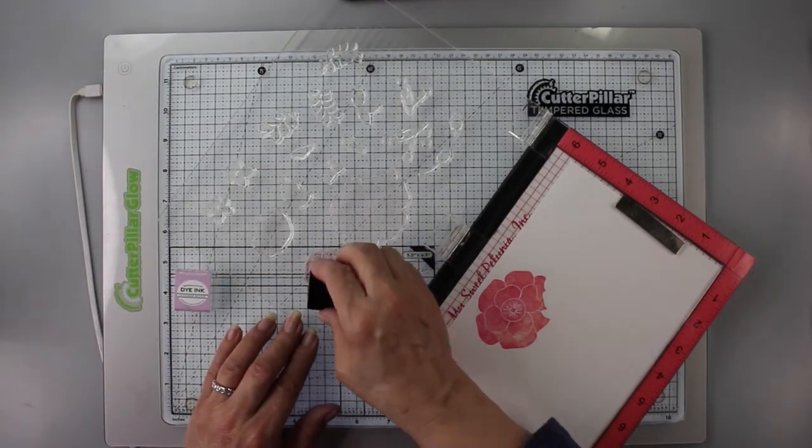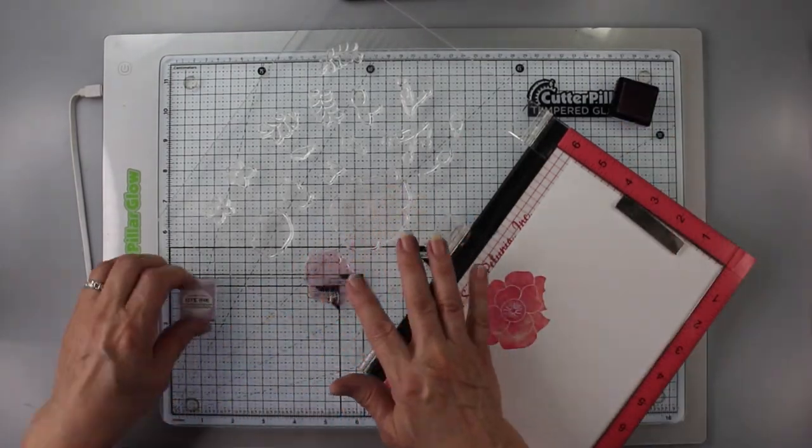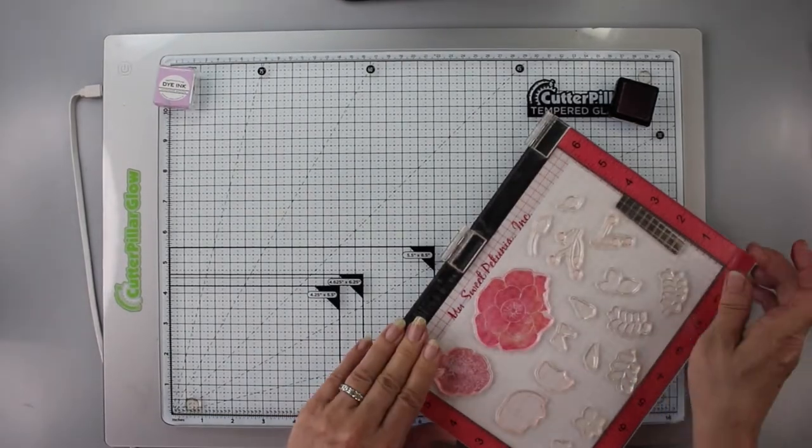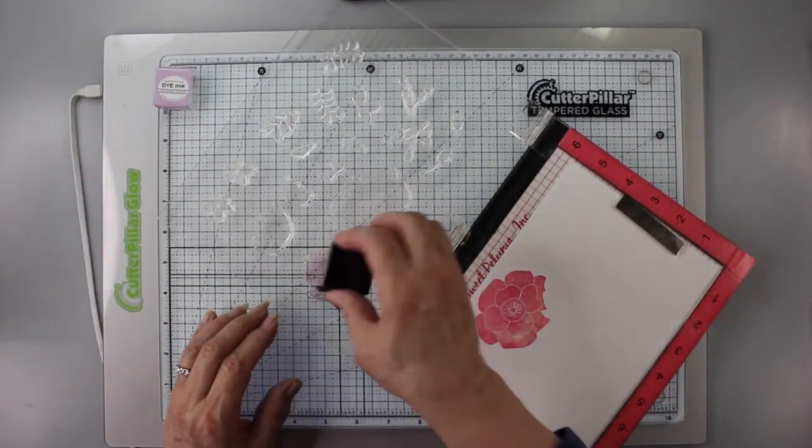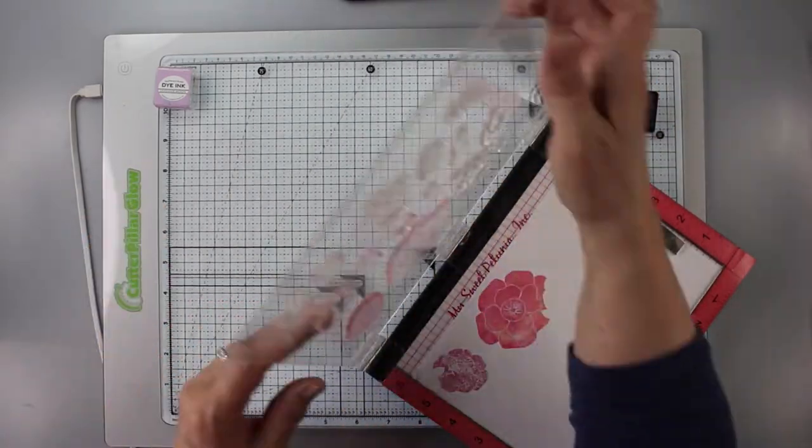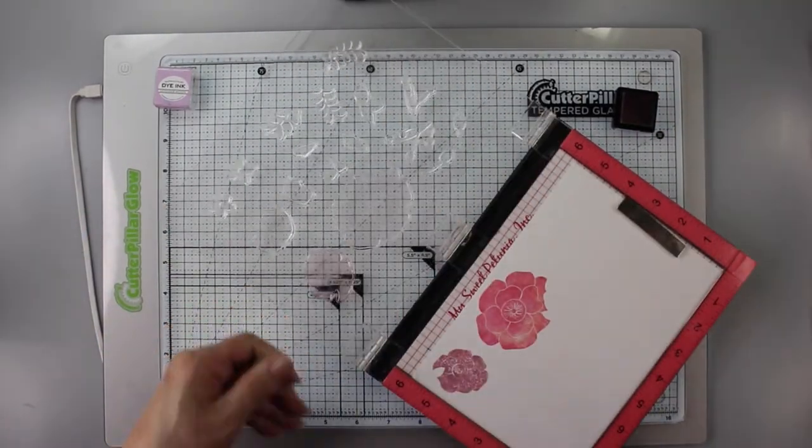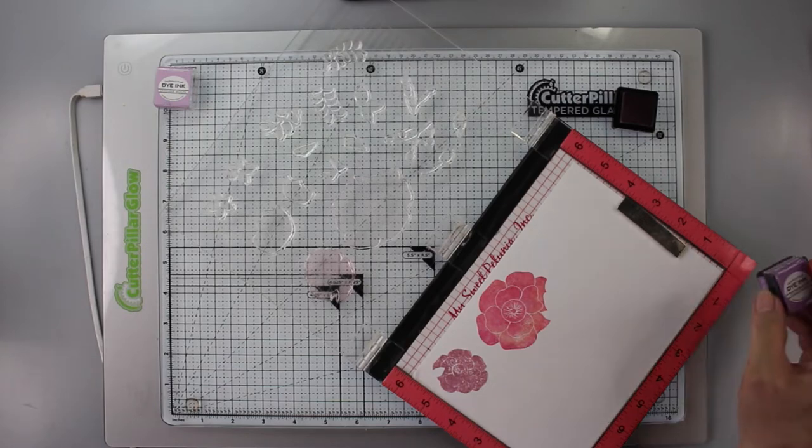So I'm going to go to the next flower, which I'm using Lavender Moon. And then for the darker shading part of it, Plum Pudding. And I always put the darker shade in the center and then around the edges. Just to give that little extra dimension.